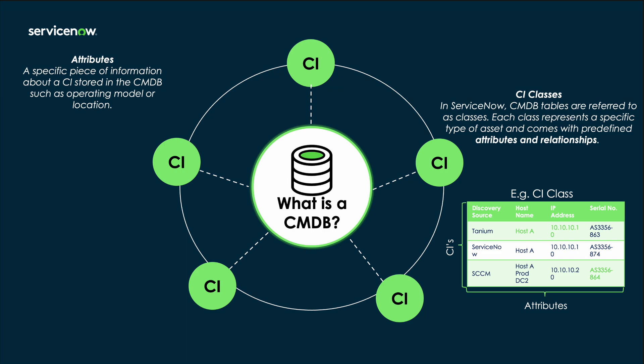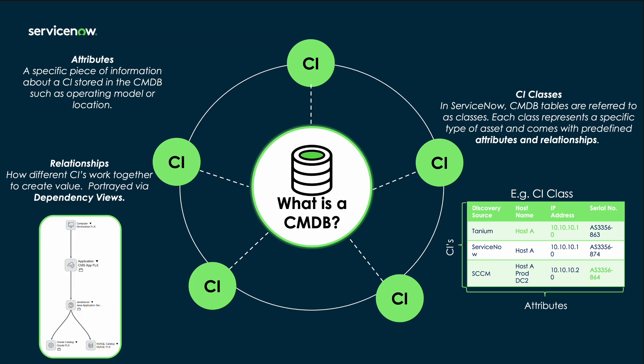One of the most important features of a CMDB is that it also tracks relationships between different CIs, as well as their dependencies on each other. These relationships are graphically mapped in what we call dependency views or service maps, so we can see clearly which CIs must work together in order to create value. And if one CI goes down or has an outage, we can immediately see the affected CIs that may also be impacted.